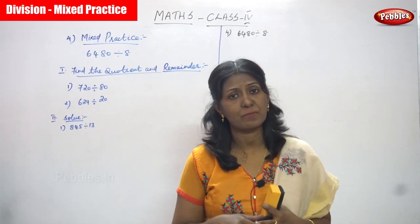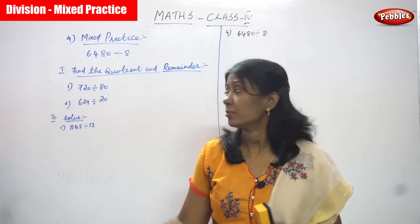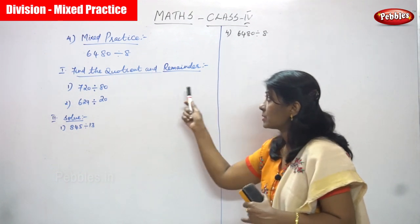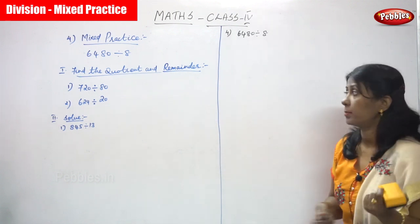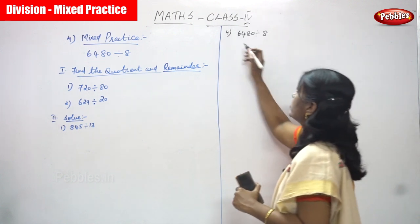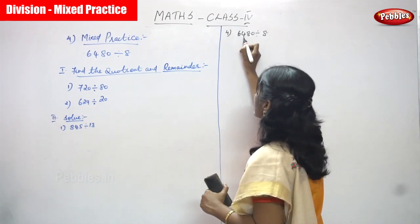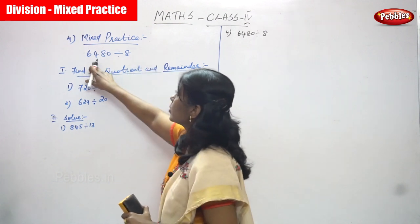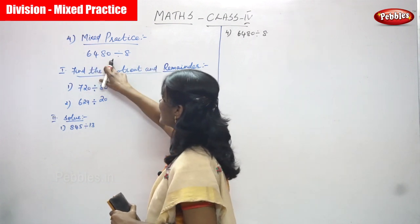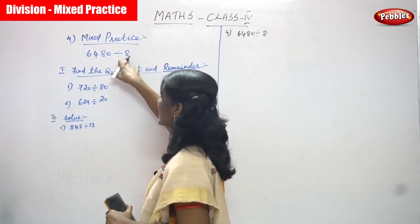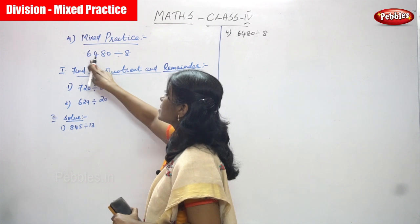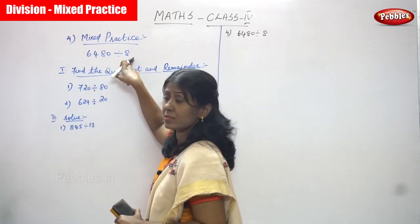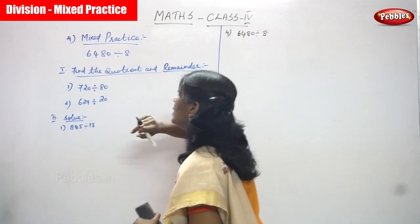Now we are going to practice some sums. This is mixed practice. The first question is 6480, which is divided by 8. Here we have a four-digit number and a single-digit number, so we are going to divide.